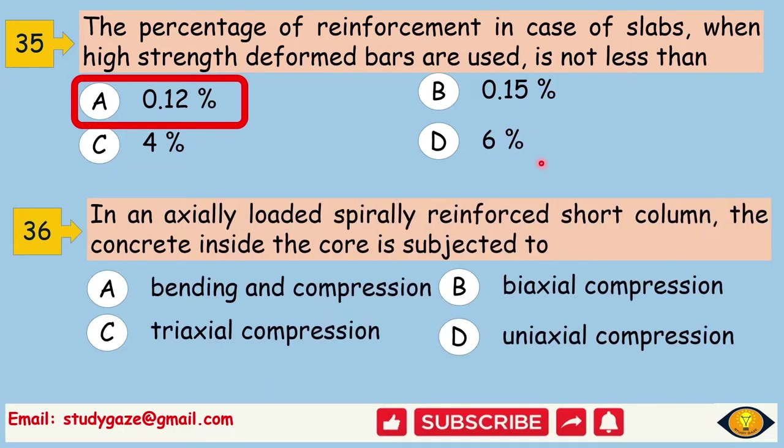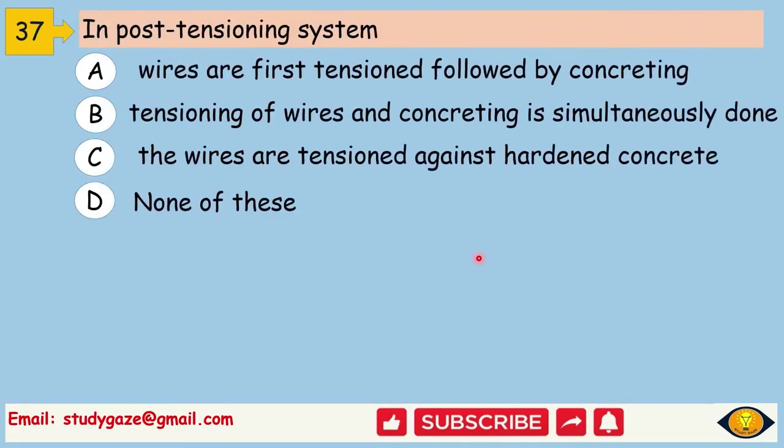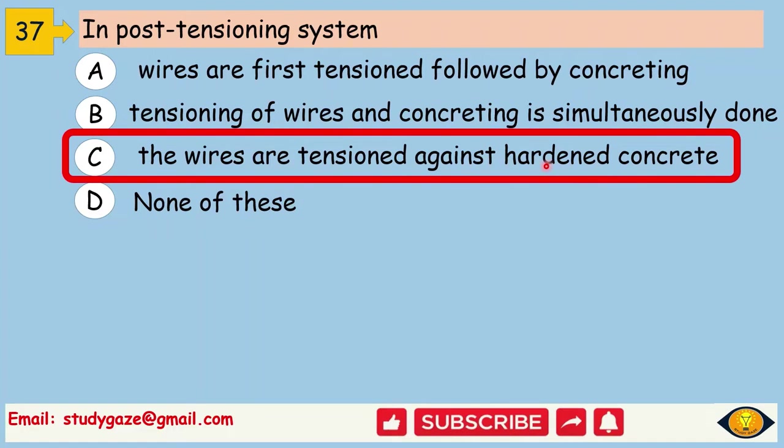In an axially loaded spirally reinforced short column, the concrete inside the core is subjected to. Answer is uni-axial compression. In post-tensioning system, the wires are tensioned against hardened concrete.